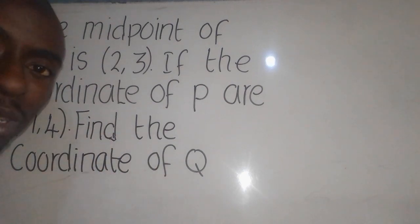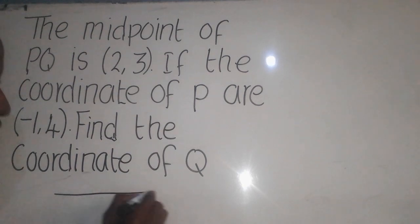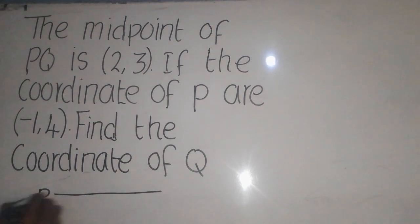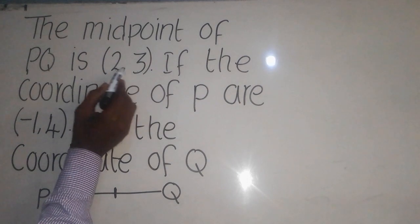We need to understand the actual meaning here. Let's assume that we have a line here. This is P. This is Q here. When they say the midpoint, it simply means here. So here, that's where the coordinates are for this one.